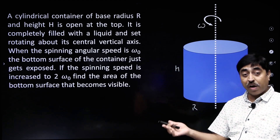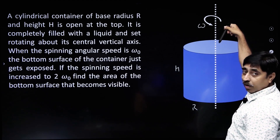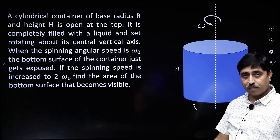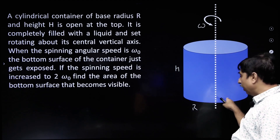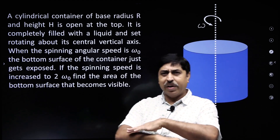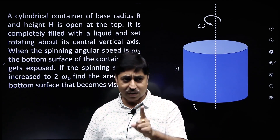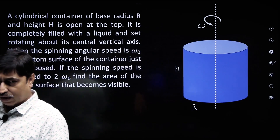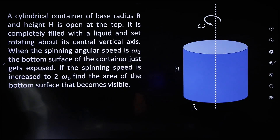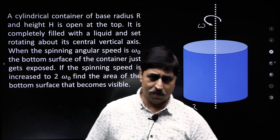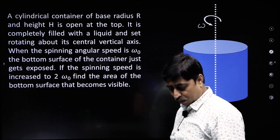How much area of the bottom surface will be visible if you are looking into the cylinder from the top? That is, how much area will basically not have any liquid over it? That is the question. I am getting out of the screen so that you can capture the question and give it a try on your own. Do try it — many of you I think will be able to do it.